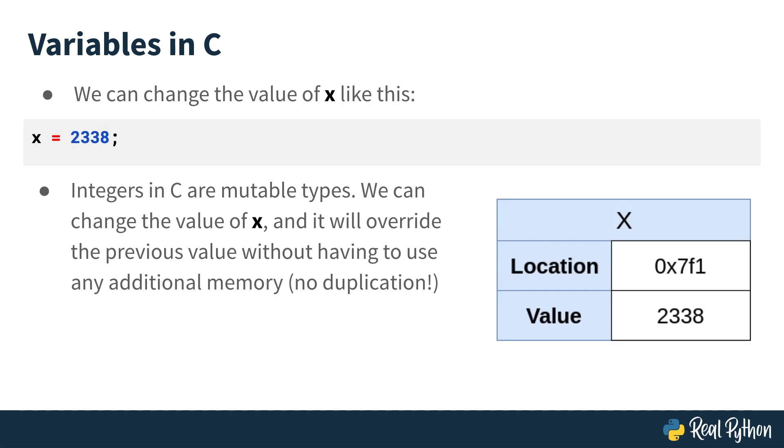What's interesting about C is that it actually treats the integer as a mutable type. This means that we could change the value of x and it would actually overwrite the previous value without having to create a duplicate integer in memory with the new value.